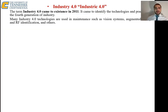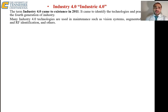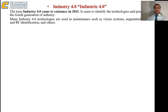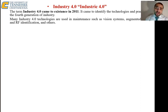We also need to talk about recently evolving terms because the book is a little outdated. Industry 4.0 has really been the key word since 2011. It came to identify the technology and processes of the fourth generation of industry, meaning there were three previous generations before it. So the question is: what are those previous three generations of industry?